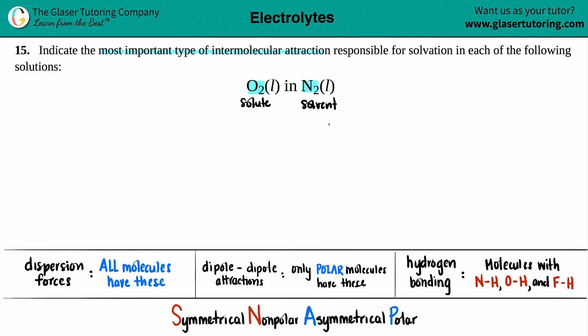When the solute and the solvent, when O2 and N2 are now together, they can communicate with each other and they can form attractions. These are called intermolecular attractions, intermolecular forces as well. We want to know the specific most important type of intermolecular force when O2 is being dissolved in N2 and they're communicating with each other. The most important force is always going to be the strongest attraction that is common between them.